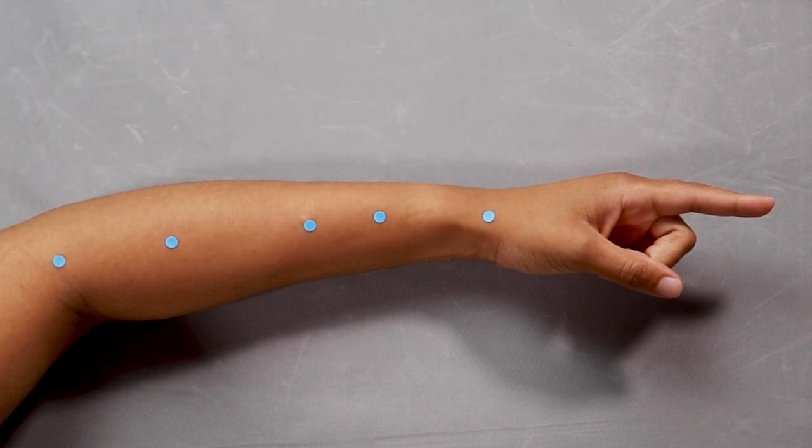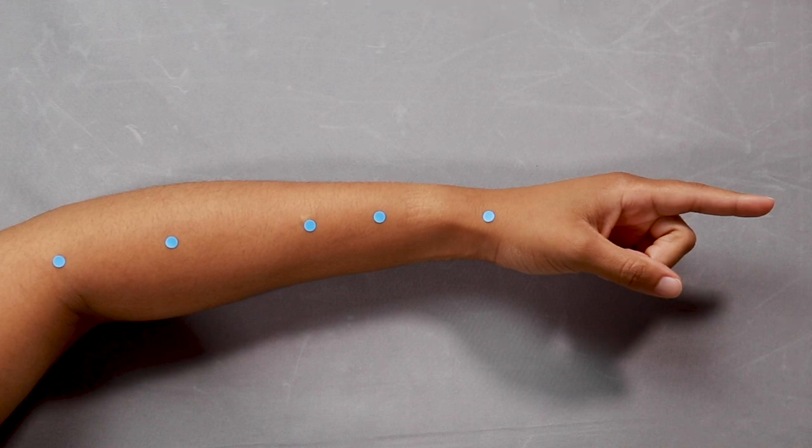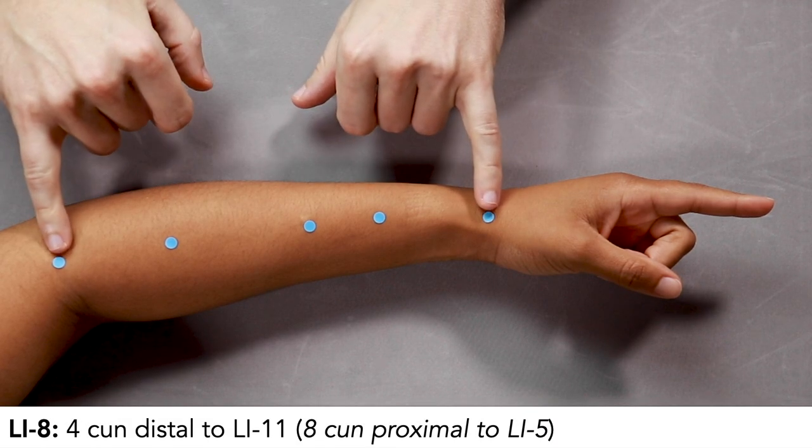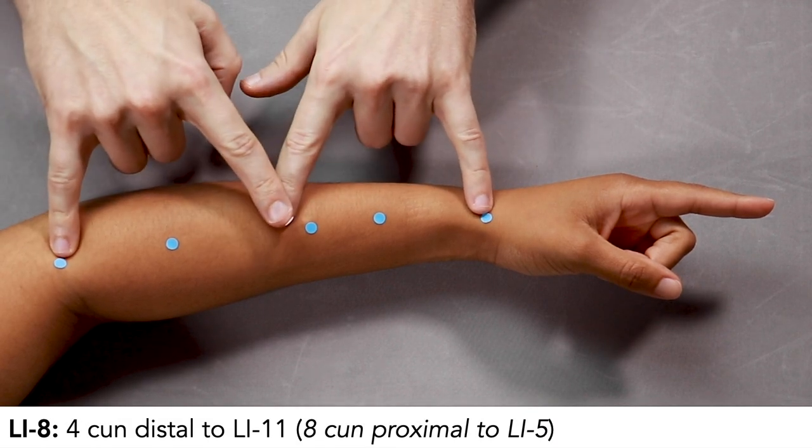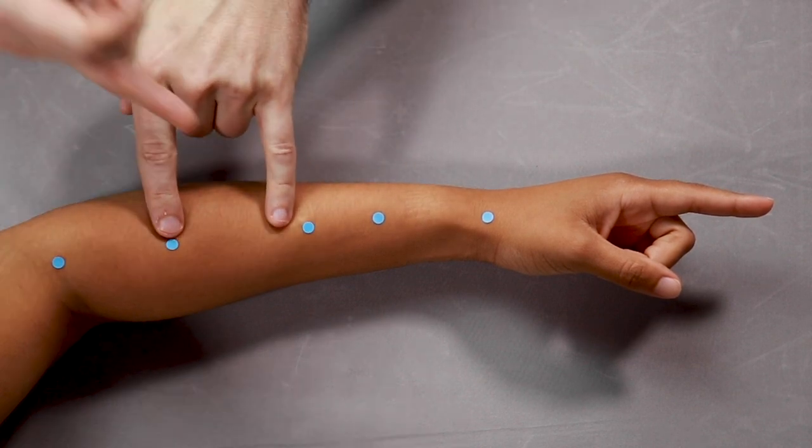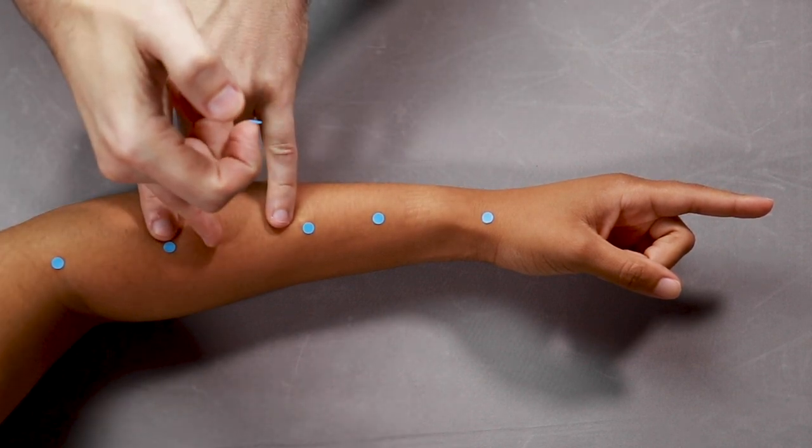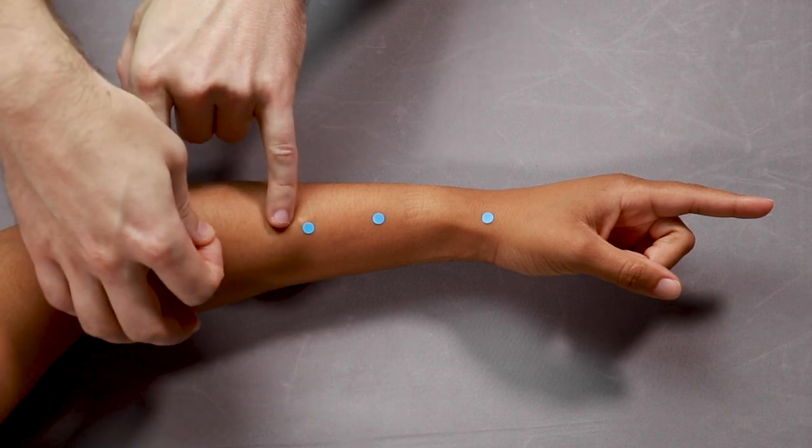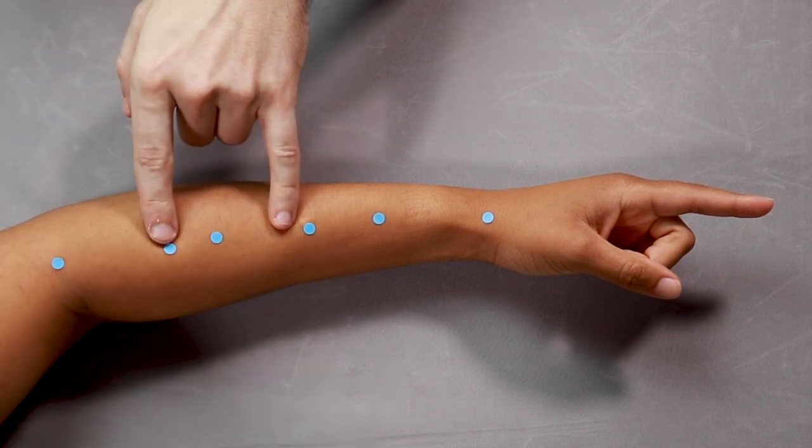After we have LI9, LI8 and 10 are just 1 cun on either side. Here's 12 cun. Half of 12 is 6. Halfway between 6 and 12 is 9. This is 6, 7, 8, 9. We want 8 cun for LI8.